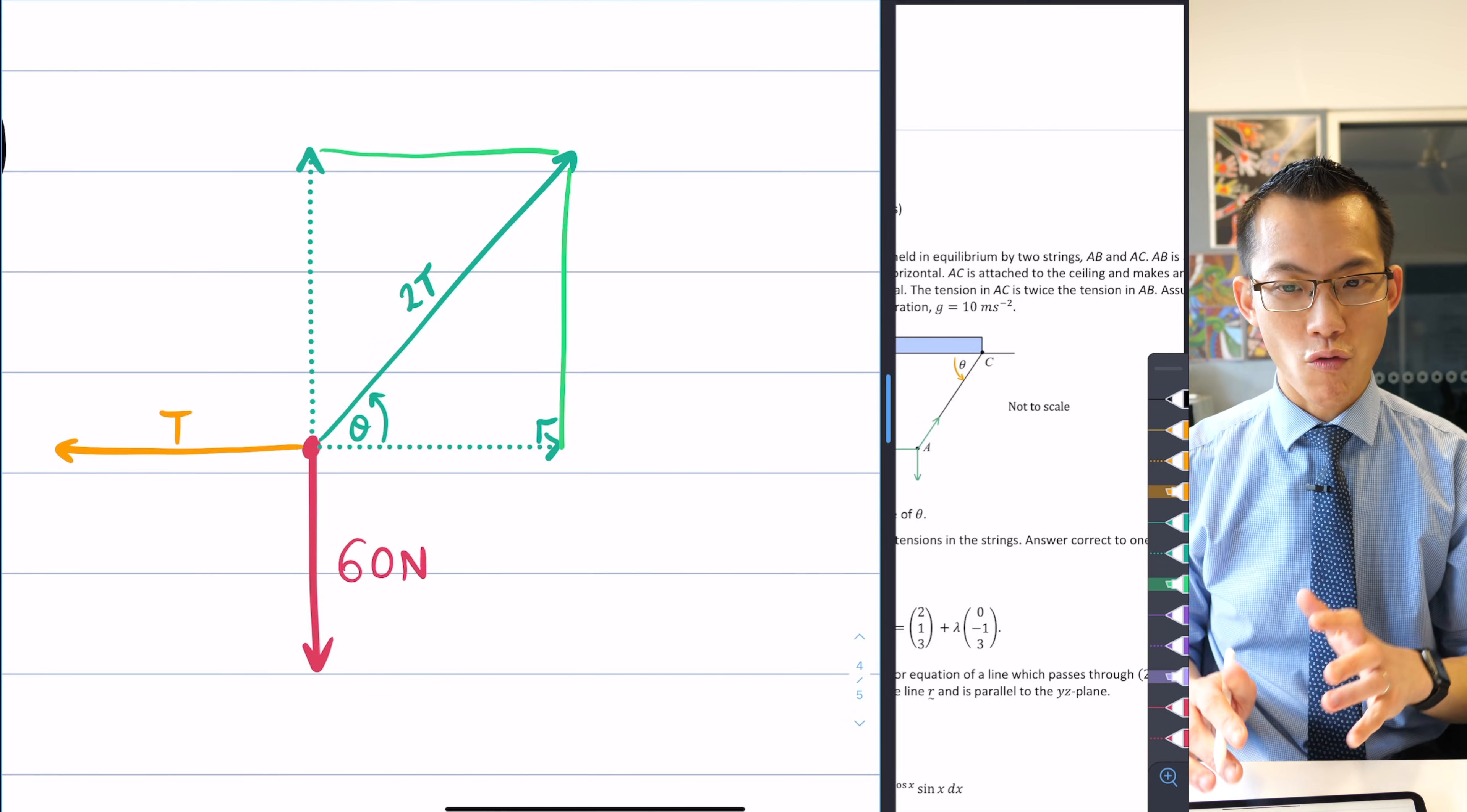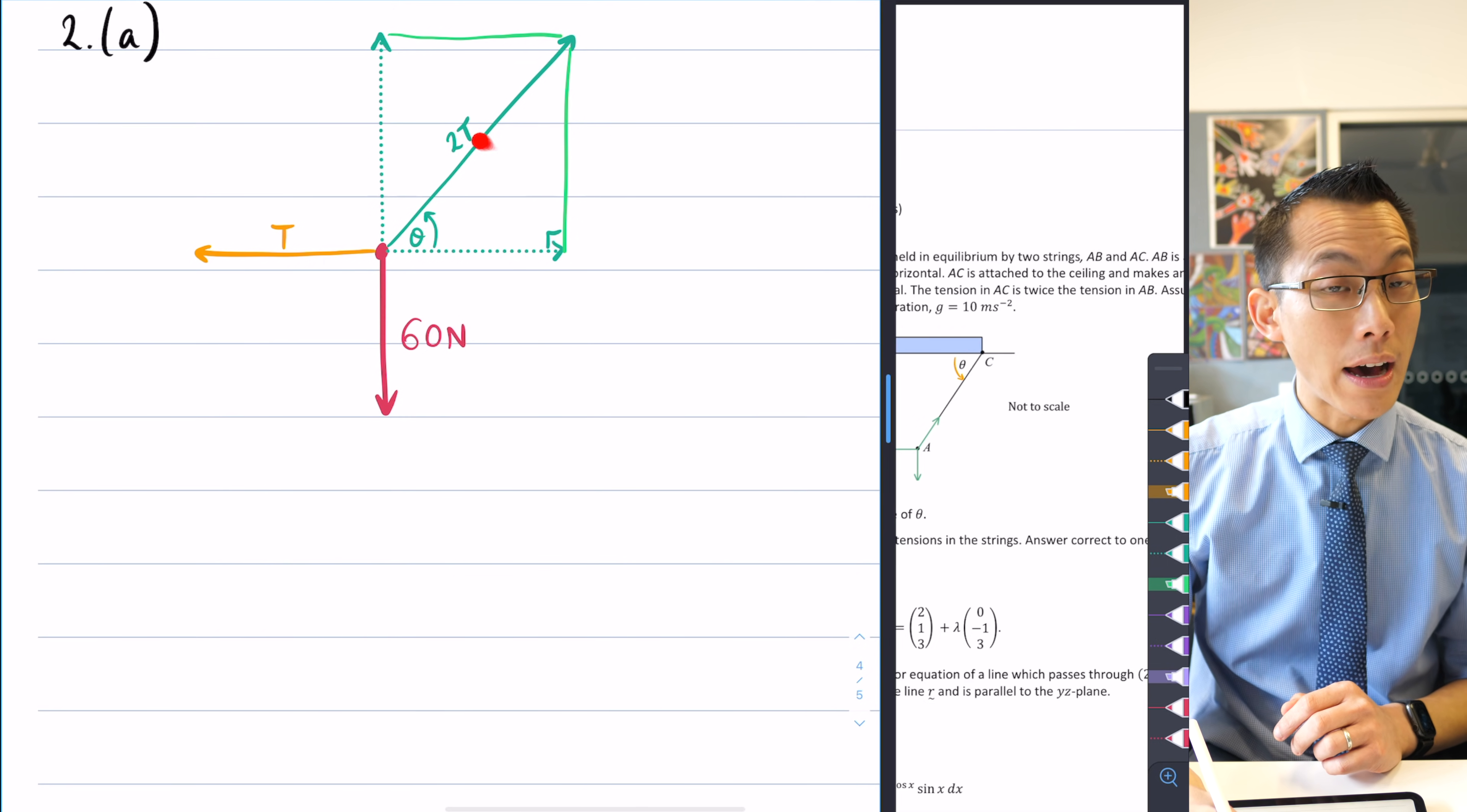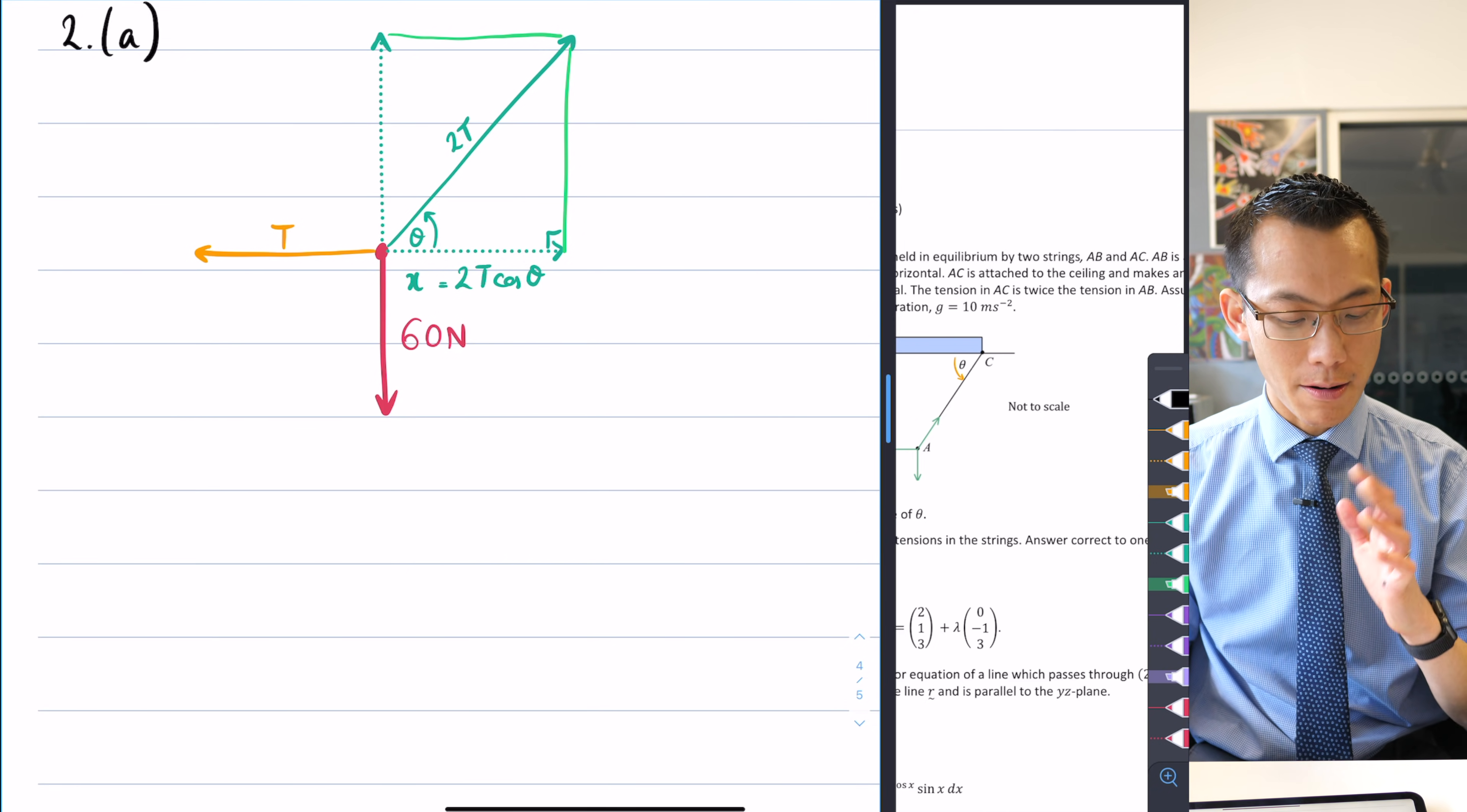Since A is in equilibrium, I can say that these two forces, the horizontal one this way and the horizontal force that way, they're going to be the same, and also this force vertically and this force from gravity will be the same. Now that I've got my force diagram, if you have a look at this diagram, cos theta is going to be this adjacent side divided by the hypotenuse. If I call this x because it's a horizontal length, cos theta equals x on 2t, so x by itself will be 2t times cos theta.